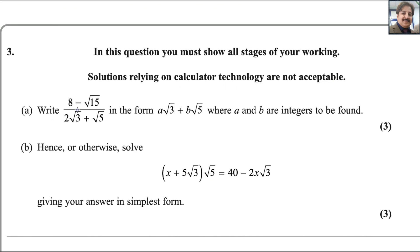First part: write 8 minus square root 15 over 2 square root 3 plus square root 5 in the form A square root 3 plus B square root 5, where A and B are values to be found.